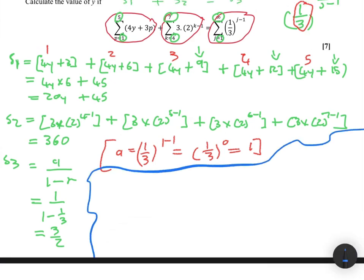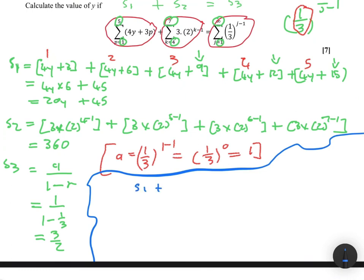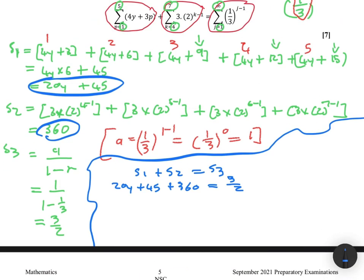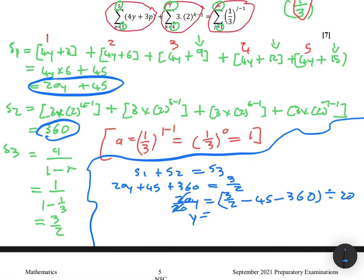Now let's finish the problem. We said S1 plus S2 equals S3. S1 is 20y plus 45, S2 is 360, and S3 is three divided by two. So we have 20y equals three-halves minus 45 minus 360. Dividing both sides by 20, we get y equals that entire term divided by 20, giving y equals approximately negative 20.175.